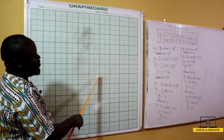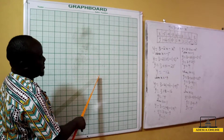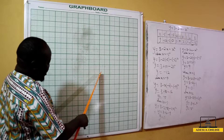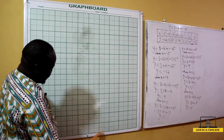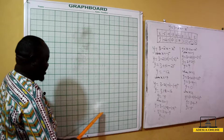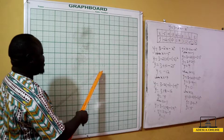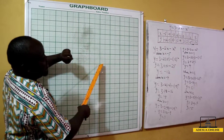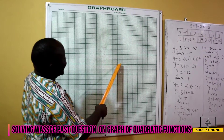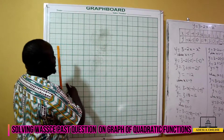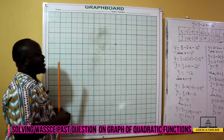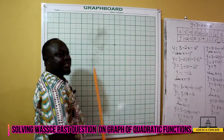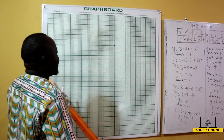Now we consider the values of y — two centimeters to two units on the y-axis. Our least value of y is negative 12, so we start from about negative 14: negative 14, negative 12, negative 10, negative 8, negative 6, negative 4, negative 2, 0, 2, 4, 6, 8, 10. Our highest value of y is positive 4, so we can make a point two steps ahead our origin, giving us up to positive 6 on the y-axis.